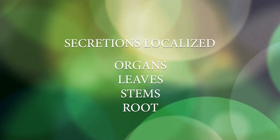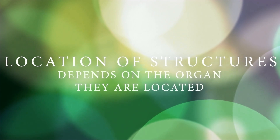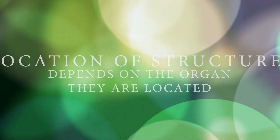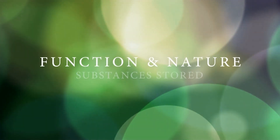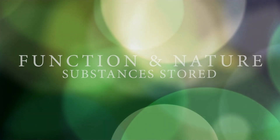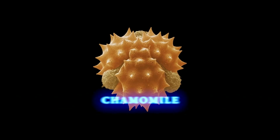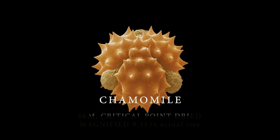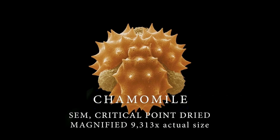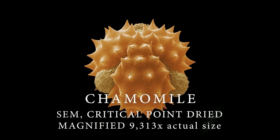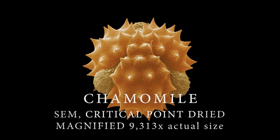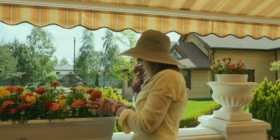The location of these structures depends on the organ in which they are located and the function and nature of the substance stored and secreted by the glands. This is a single pollen grain of chamomile, magnified 9,313 times its actual size.